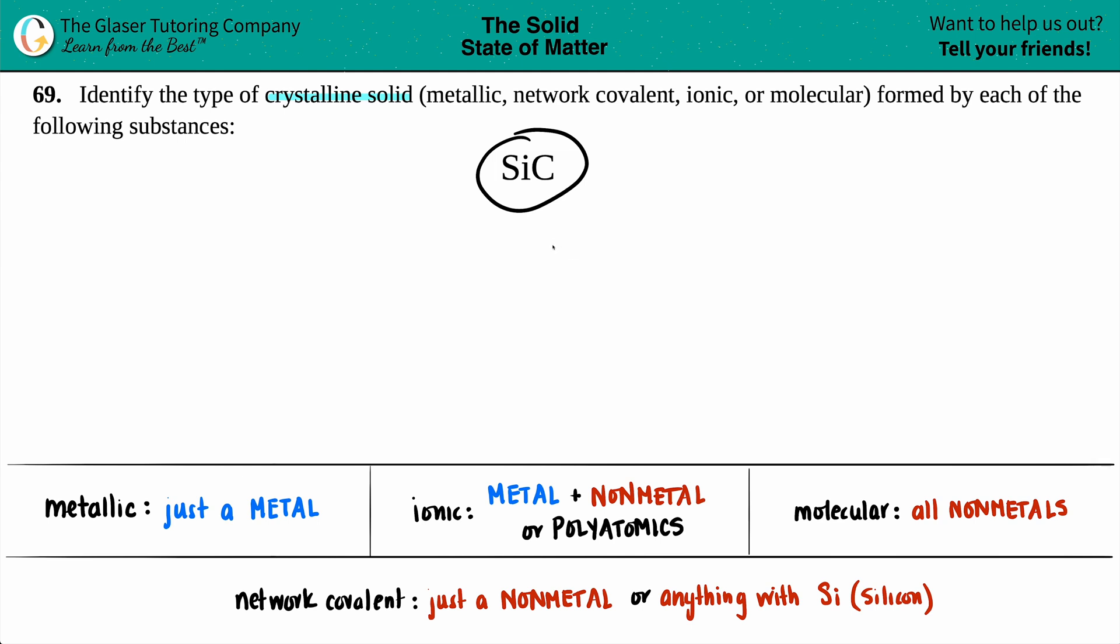We did write down here kind of like a cheat sheet to get to know the differences between these four crystalline solids. So let's just work from left to right and see which one silicon carbide falls into.